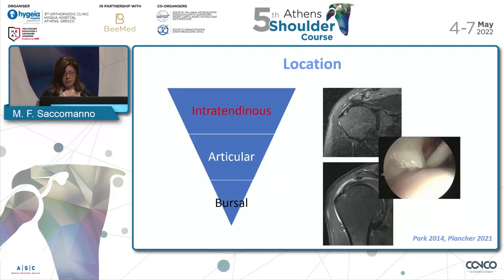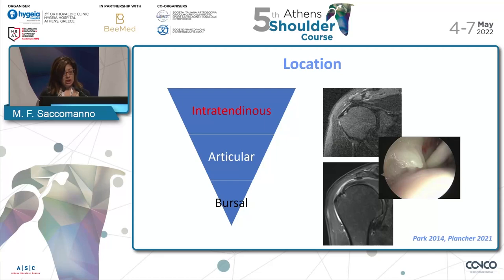I want to talk about location first, because location will help us to understand the etiology. This probably has less connection with conservative treatment, but for sure has a connection with natural history and operative treatment. They are usually divided into intratendinous tears, articular, and bursal-sided. Although literature is conflicting about the prevalence of this type of lesion, especially looking at cadaveric studies, intratendinous ones appear to be the most common type.